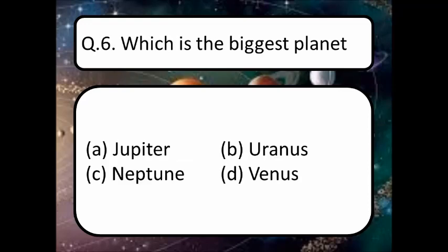Our next question: which is the biggest planet? Read out the options: Jupiter, Uranus, Neptune, or option D — Venus. Think about the correct answer. The correct answer is option A: Jupiter. Jupiter is the biggest planet.